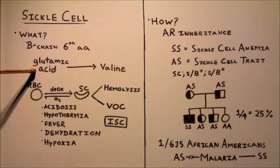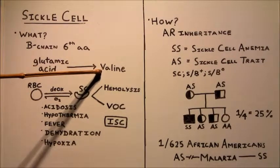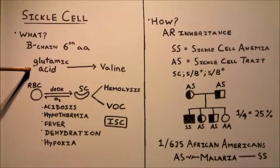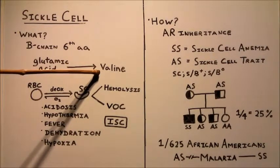So glutamic acid is a hydrophilic amino acid, meaning that it attracts water, while valine is hydrophobic, meaning that it repels water. So this change from a hydrophilic amino acid to a hydrophobic amino acid causes a change in the structure of hemoglobin.